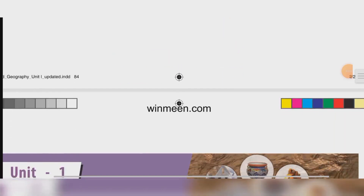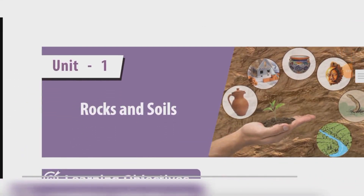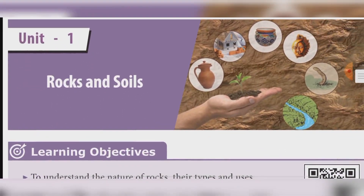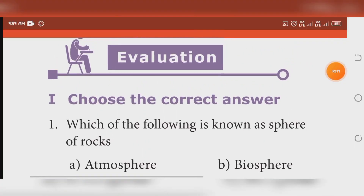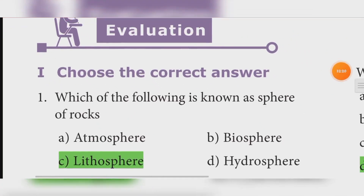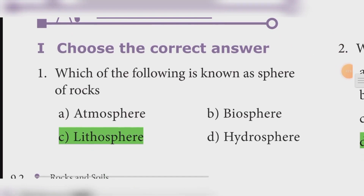Unit 1, Rocks and Soils. Choose the correct answer. First question: Which of the following is known as the Sphere of Rocks? Answer: Lithosphere.